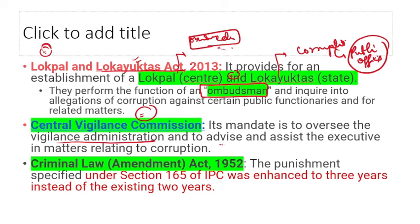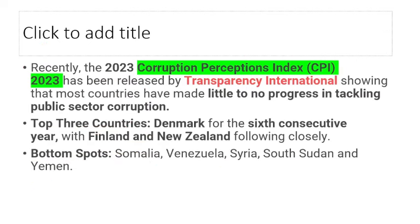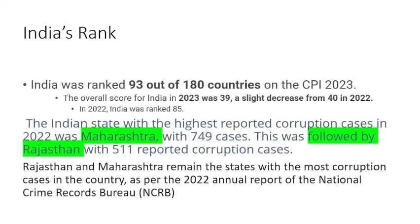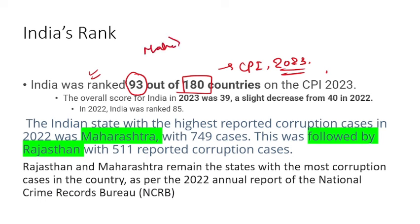Central Vigilance Commission (CVC) oversees Vigilance Administration and advises the executive in matters related to corruption. The Criminal Law Amendment Act enhanced punishment under Section 165 of IPC to 3 years (from 2 years) for those involved. The Corruption Perception Index, released by Transparency International, ranks countries — Denmark is number 1 (least corrupt), followed by Finland and New Zealand. India's rank is 93 out of 180 countries as per CPI 2023.